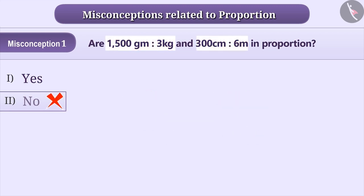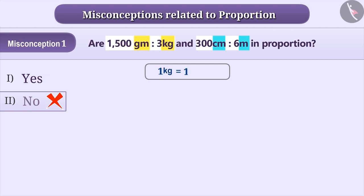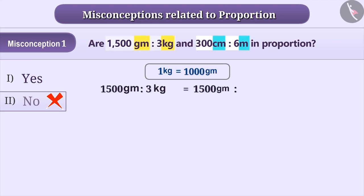The correct understanding is that the ratio of two different quantities can also be in proportion. To express them in ratios, we need to make the units of quantities equal. Since 1 kg is equal to 1000 grams, therefore 1500 grams is to 3 kg is equal to 1500 grams is to 3000 grams. Thus, 1500 grams is to 3 kg is equal to 1 is to 2.